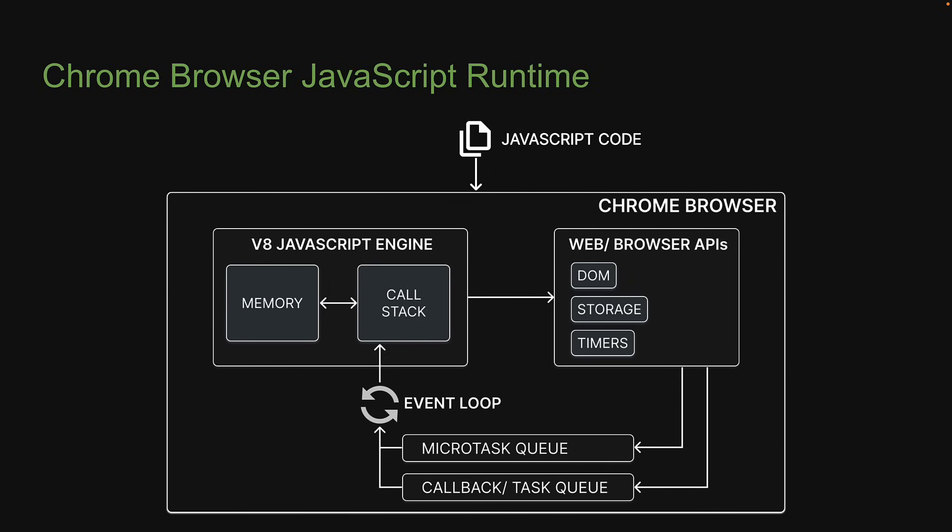Queues are where asynchronous tasks wait before they can be executed. Finally, we have the event loop that ensures async tasks are executed in the right order.